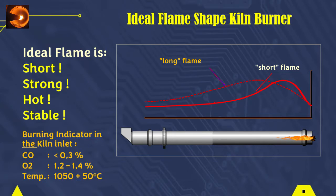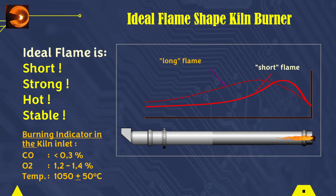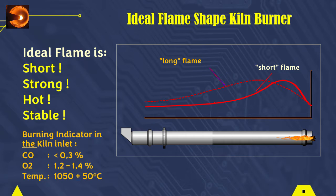The ideal burner flame shape for kiln operation in a cement plant is short, strong, hot, and stable. A short flame shape can be achieved by increasing the air pressure of the primary fan above 240 bar, and the primary air volume between 6% and 8% of the required total combustion air.